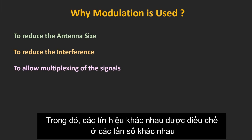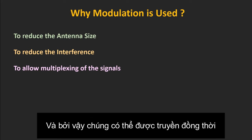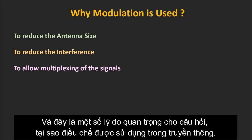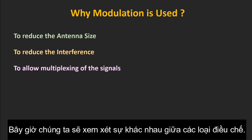In frequency division multiplexing, different message signals are modulated at different carrier frequencies, and because of that they can be transmitted simultaneously. These are some of the important aspects of why modulation is used in communication. Now let's see the different types of modulation.